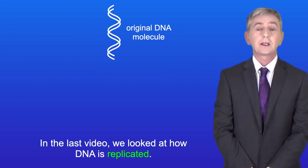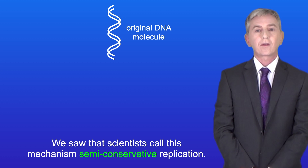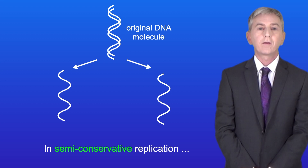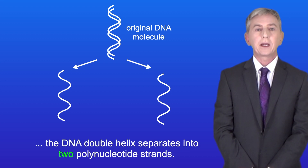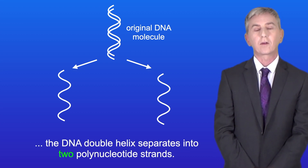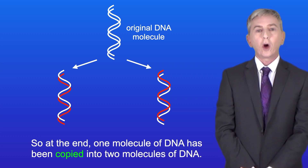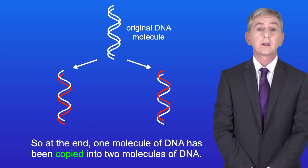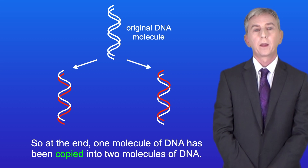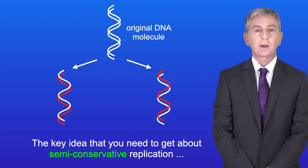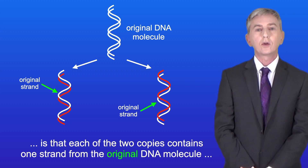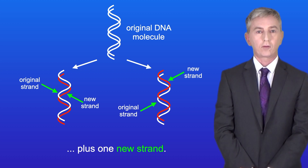In the last video we looked at how DNA is replicated. We saw that scientists call this mechanism semi-conservative replication. In semi-conservative replication the DNA double helix separates into two polynucleotide strands, and each strand is then replicated into a complementary new strand. So at the end, one molecule of DNA has been copied into two molecules. The key idea is that each of the two copies contains one strand from the original DNA molecule plus one new strand.